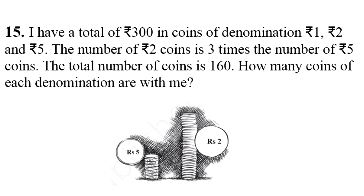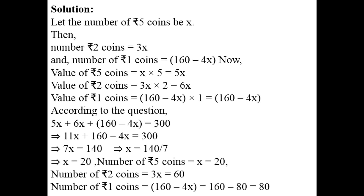मुझे find करना है कि 1 rupees के कितने coins हैं, 2 rupees के कितने coins हैं और 5 rupees के कितने coins हैं। 2 rupees coins के number, 5 rupees coins के number से तिगुने हैं, तो 5 rupees coins का number x मानें और 2 rupees coins का number 3x। Total number of coins 160 है, तो 160 minus (3x plus x) = 160 minus 4x, जो आ जाएंगे number of 1 rupees coins।